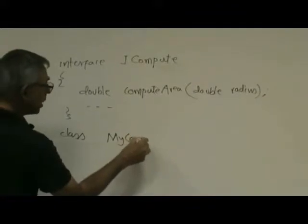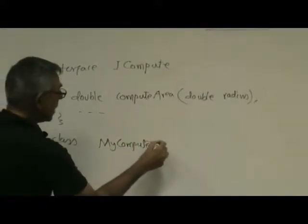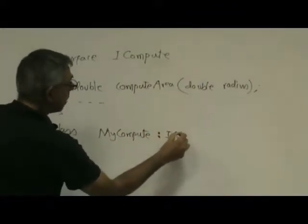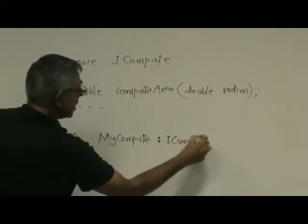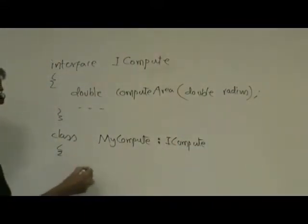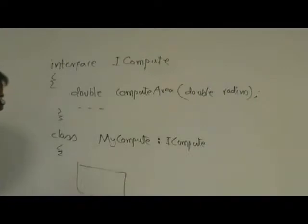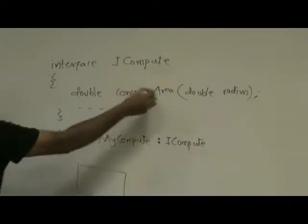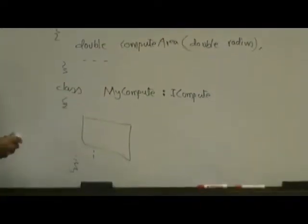suppose we call it myCompute. Okay. Now we will say we'll implement the iCompute interface, and then we will write the real code for whatever the methods are defined in the interface. Okay.